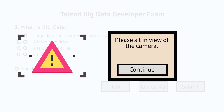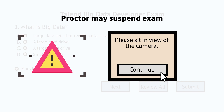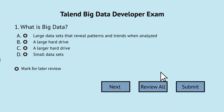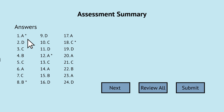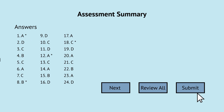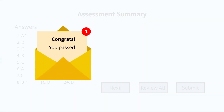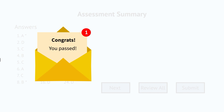If you receive a message from the proctor, the exam timer is paused while you read and reply to it. If you can't resolve the issue, such as an audio or video problem, the proctor may suspend the exam, and you'll need to rebook your exam, which will incur a fee. So remember, prepare ahead and test your audio, video, and internet connection. As you work your way through the exam questions, you'll have the option to mark any questions for later review. Click Review All to review all your questions — the questions marked for later review are highlighted. Answer all the questions because there are no negative points for wrong answers. The exam ends when you click Submit or when the timer runs out. After you complete the exam, you'll get your result and topic scoring information immediately.